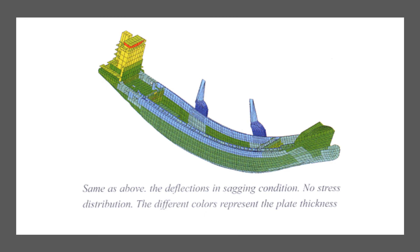This is showing the same multi-purpose vessel, and the deflections are now in sagging conditions. There is no stress distribution here; instead, the different colors represent the plate thickness. Sagging is the vertical deflection of a ship's hull in the longitudinal direction where the hull midships is bent downward — again due to cargo distribution or the way the ship is being supported at sea or how the forces of the sea interact with the vessel in motion.